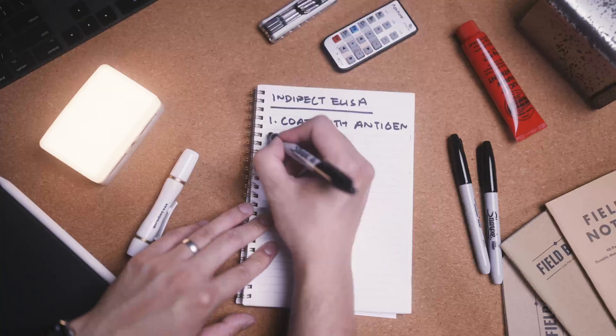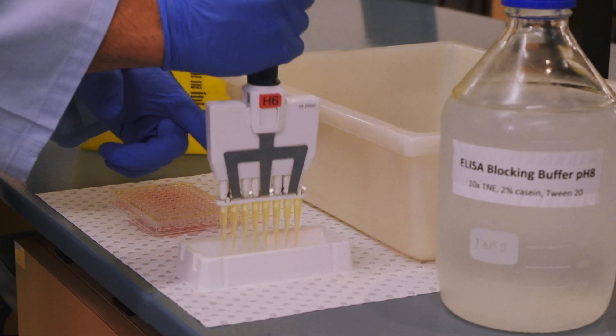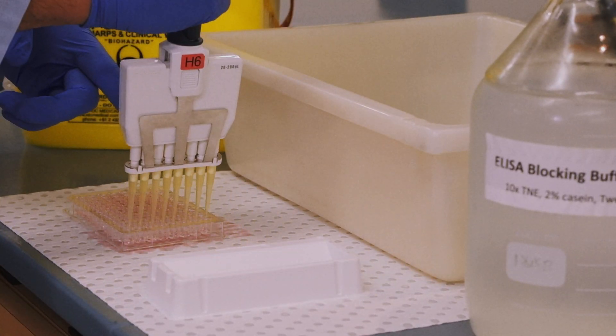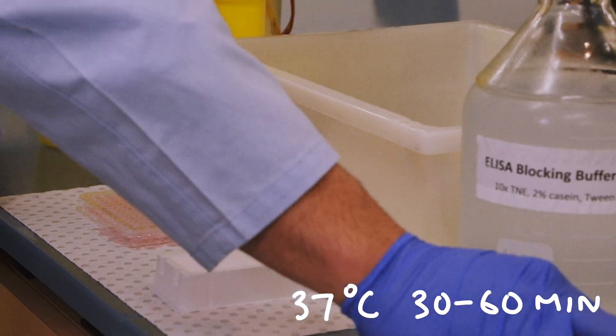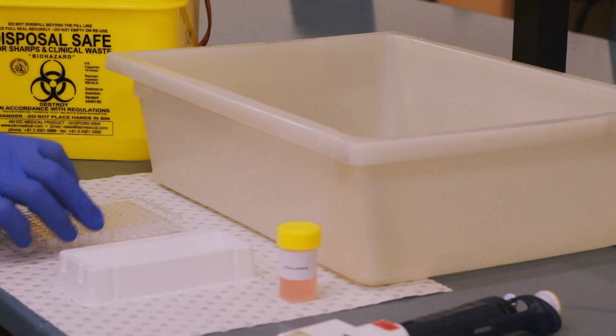We can now move on to the second stage of the ELISA and add the blocking buffer same as before. Check to make sure that a consistent volume of liquid is applied to each of the wells. The plate is then incubated at 37 degrees Celsius for 30 to 60 minutes. After the blocking incubation, flick the plate and clear off the buffer.